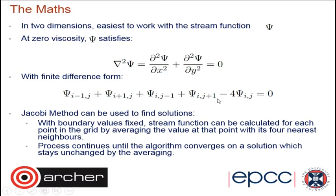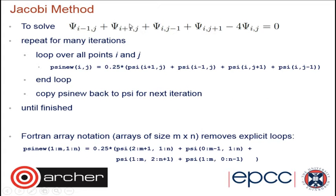When you get close to the edge, the neighboring points at the inlets are determined by the boundary conditions at the inlets — the inflow and outflow. This combination amounts to just a weighted average of the neighboring points. You start at the boundaries, compute this for all points in the grid, and repeat over and over until the algorithm converges. This approach is known as the Jacobi method. You have two variables, psi_new and psi_old, so you can copy psi_new back to psi for the next iteration.